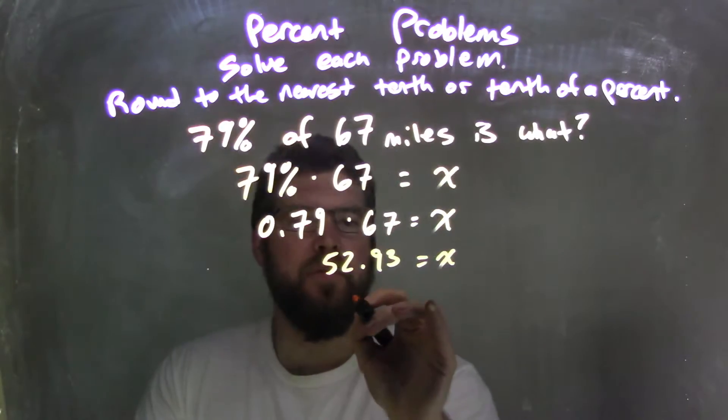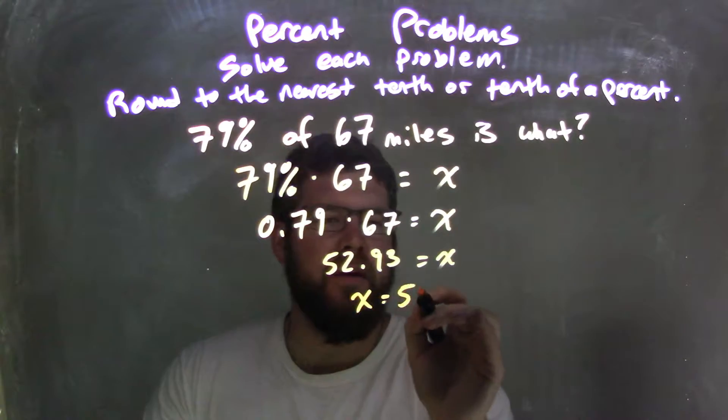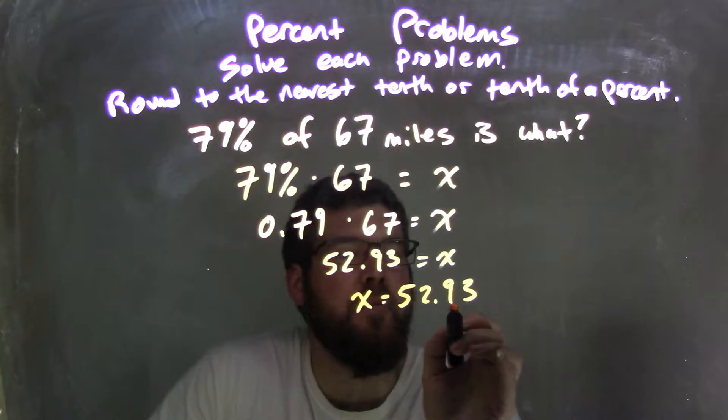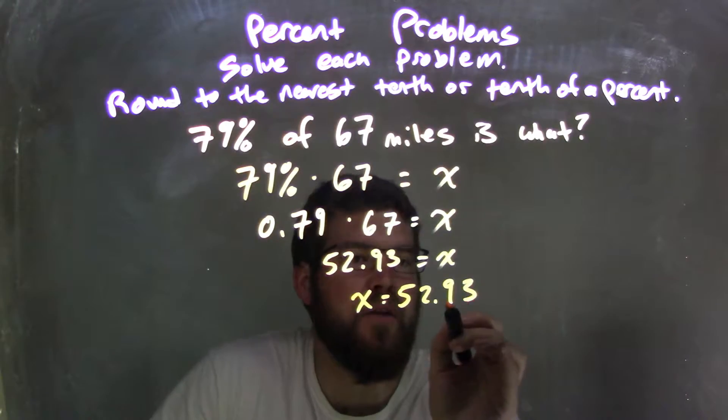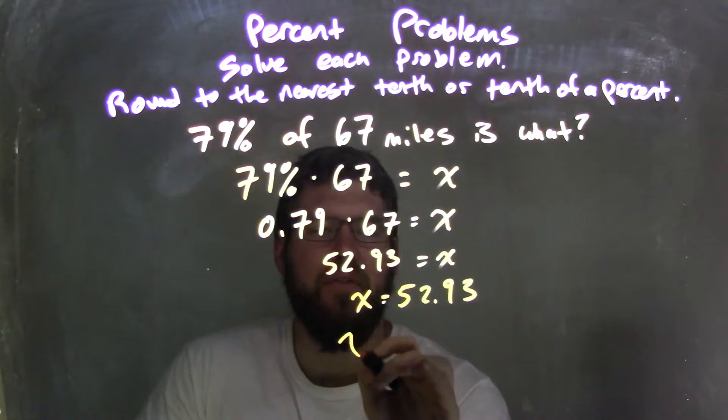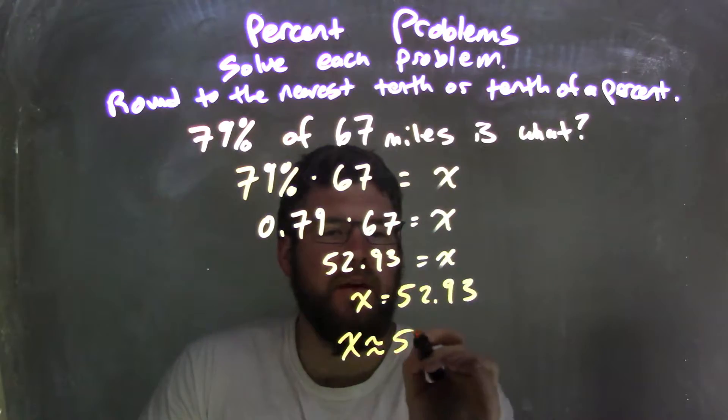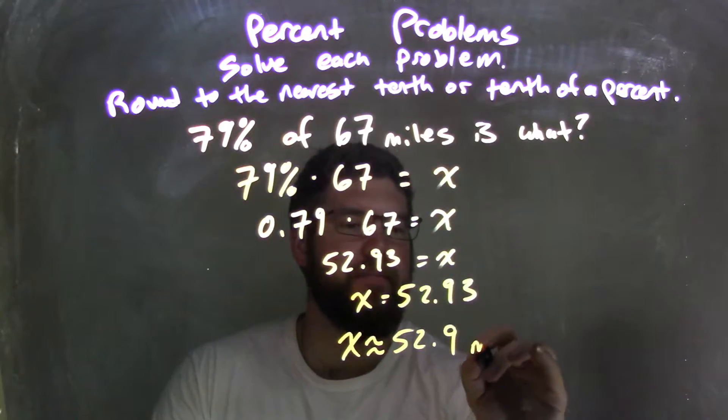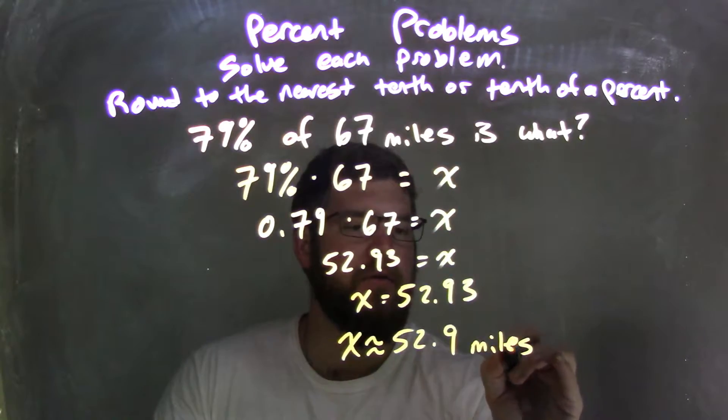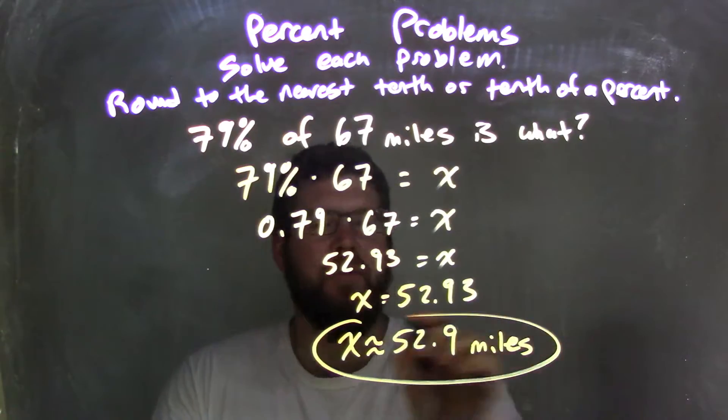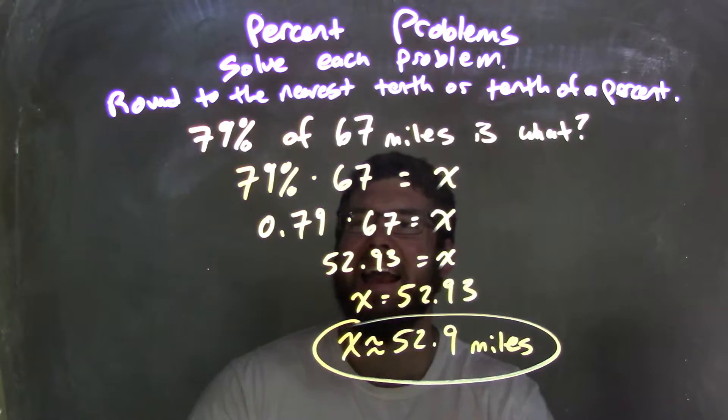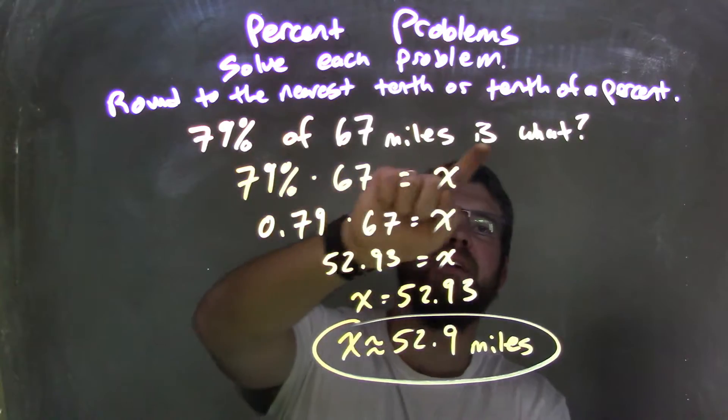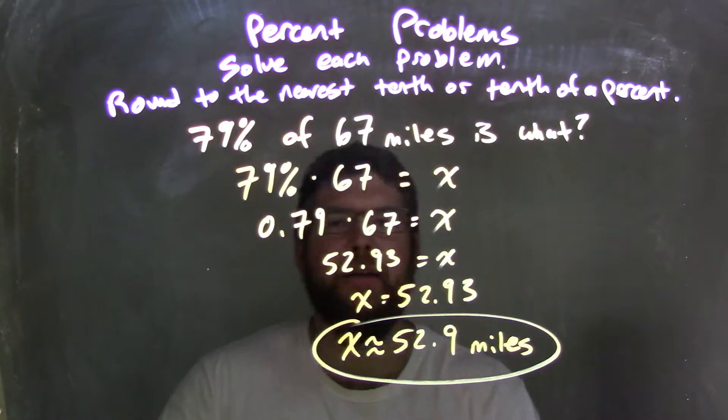Let's write x to come first. x equals 52.93. That looks nicer. Now we need to round it. Look at the 9 and the 3. The 3 causes the 9 to stay where it is. So x is approximately 52.9. Now our units, 9 what? Miles, right? Can't forget that. So our final answer here is x is approximately 52.9 miles. And it answers the question here. 79% of 67 miles is 52.9 miles.